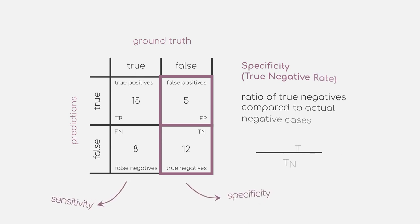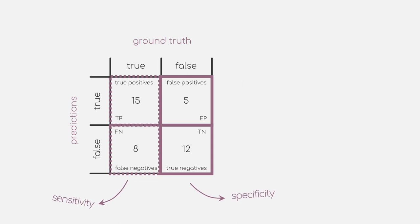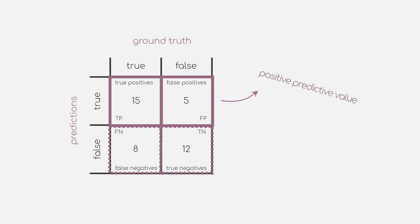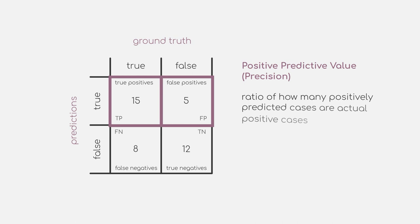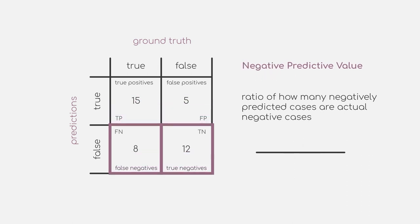Sensitivity and specificity can be matched with the columns of our grid. But we can also match the rows of our grid when we look at two different metrics: the positive predictive value and negative predictive value. The positive predictive value, also known as precision, tells us how many of our positively predicted cases are actual positive cases. Therefore, we divide the number of true positives by the sum of true positives and false positives. Similarly, the negative predictive value tells us how many of our negatively predicted cases are actual negative cases, calculated by dividing true negatives by the sum of true negatives and false negatives.